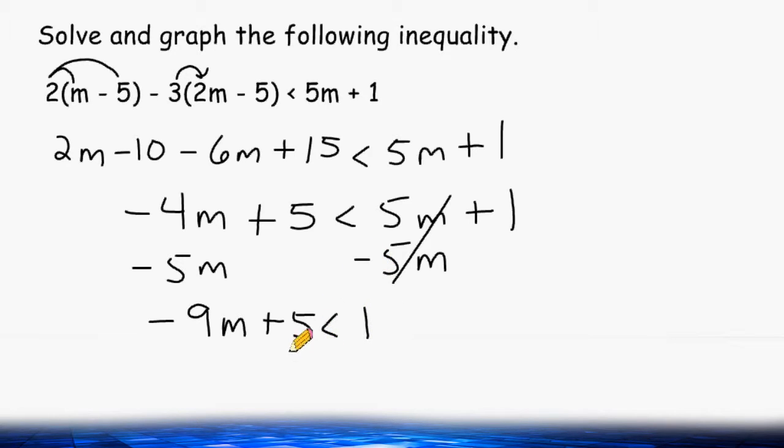The next thing we can do is move this plus 5 over to the right by doing the opposite, which is to subtract 5. Now what we have on the left hand side is just negative 9m. And on the other side of our less than symbol we have positive 1 and negative 5, which is a result of negative 4.